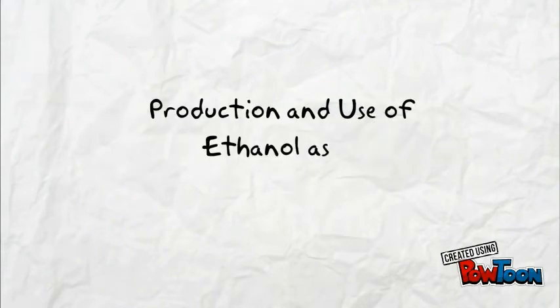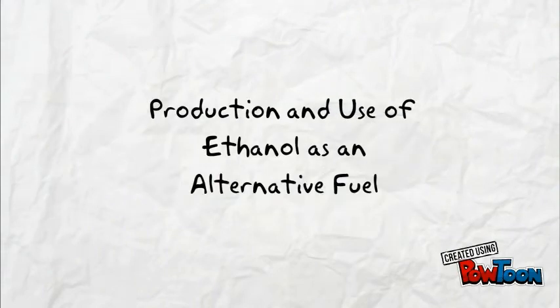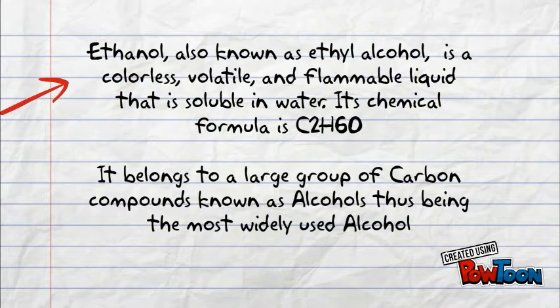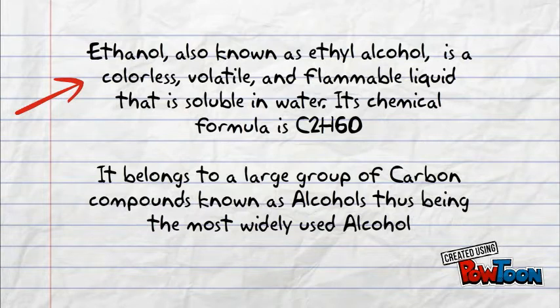The production and use of ethanol as an alternative fuel. Ethanol, also known as ethyl alcohol, is a colourless, volatile and flammable liquid that is soluble in water. Its chemical formula is C2H6O and it belongs to a large group of carbon compounds known as alcohols, thus being the most widely used alcohol.